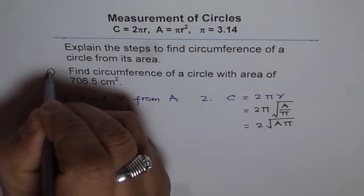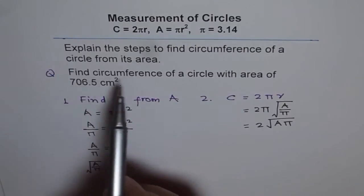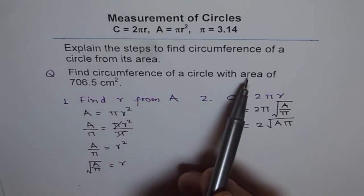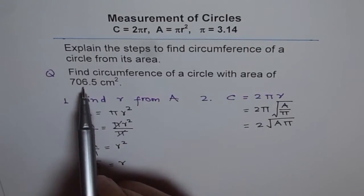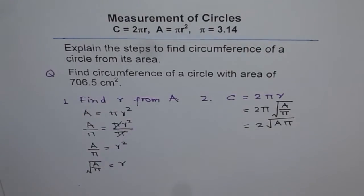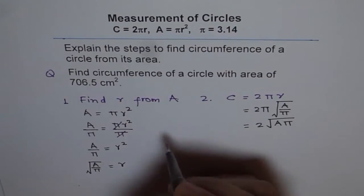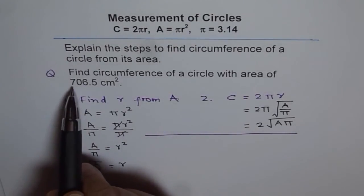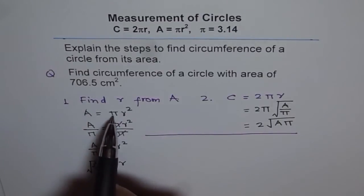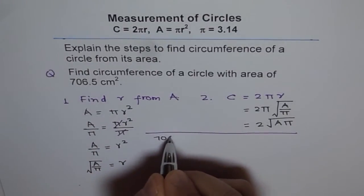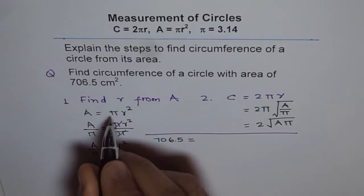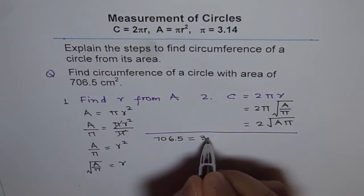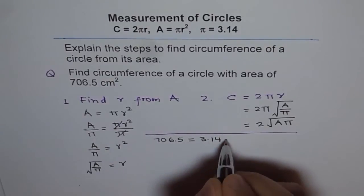We will do our question: find the circumference of a circle with area 706.5 cm². Here is our solution. We are given area of 706.5, so area is πr². We write 706.5 equals πr², and pi is 3.14, so 706.5 equals 3.14r².